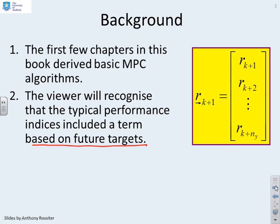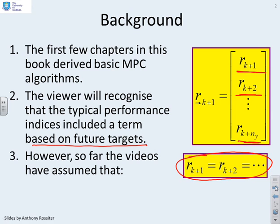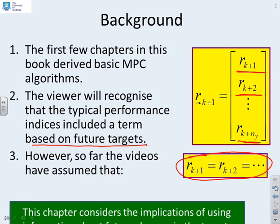Here's an example of future targets - the target one sample ahead, two samples ahead, all the way up to ny samples ahead. However, in the first five chapters, we made an implicit assumption that the future targets were all the same value with no changes.